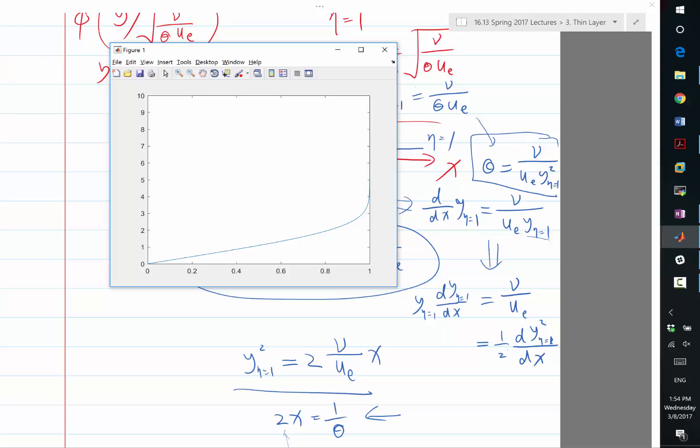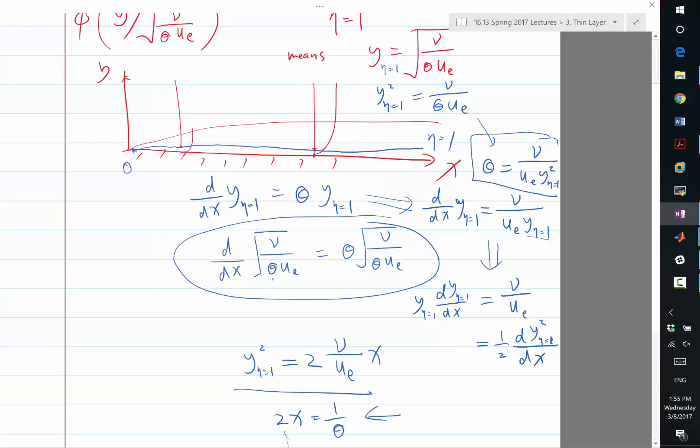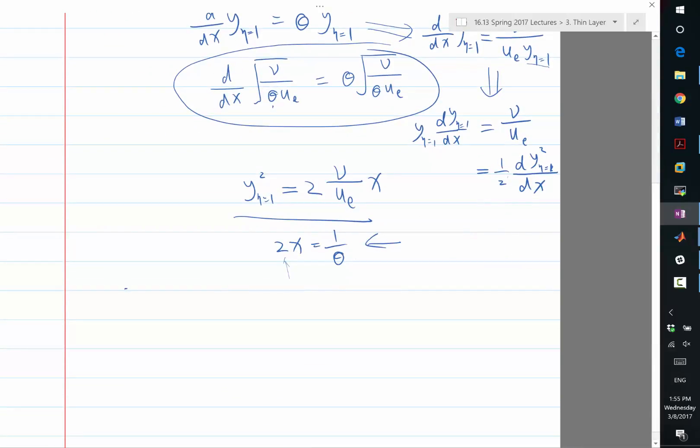By the way, the displacement thickness is the integral of streamwise velocity minus the free stream velocity divided by the free stream velocity. So I'm going to write delta is going to be equal to integral from 0 to infinity dy of 1 minus u divided by ue.